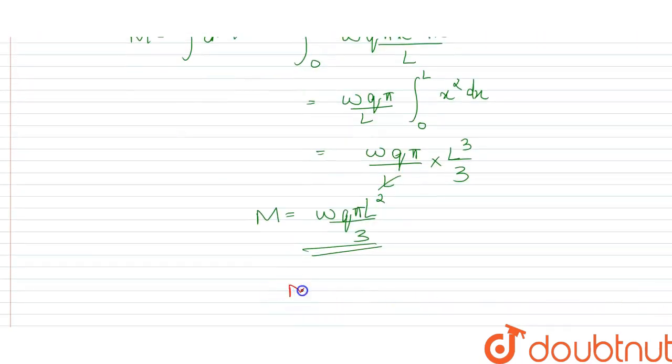So we will put values. M is equal to omega is 3, Q is 4, times π which is 3.14, times L squared which is 1 squared upon 3.